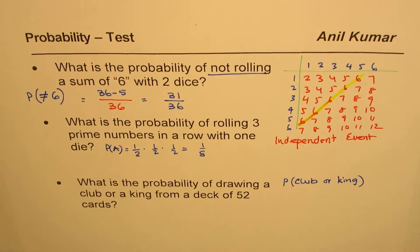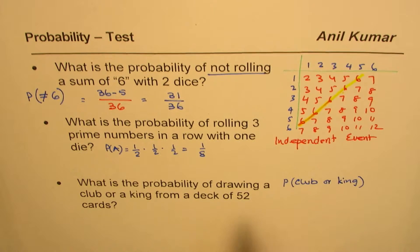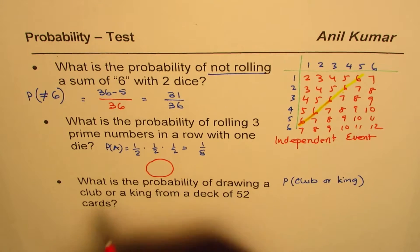Now so this is the combination where we know how many clubs are there and how many kings are there. Now what you know is that club cards are 13 in number. So this is a group like this, club.